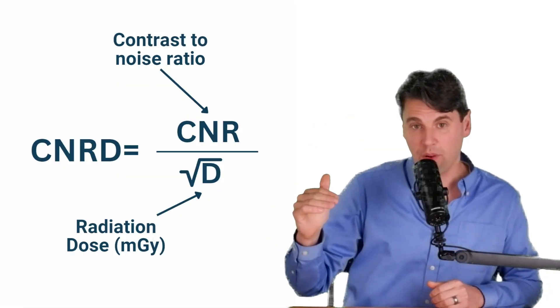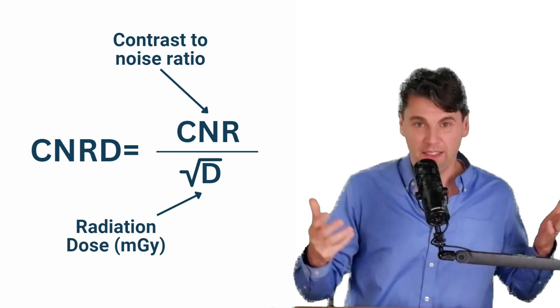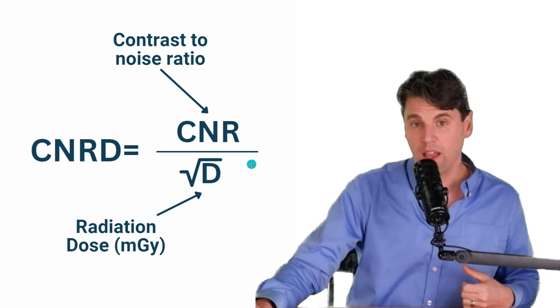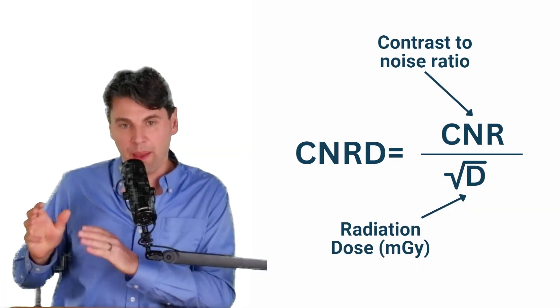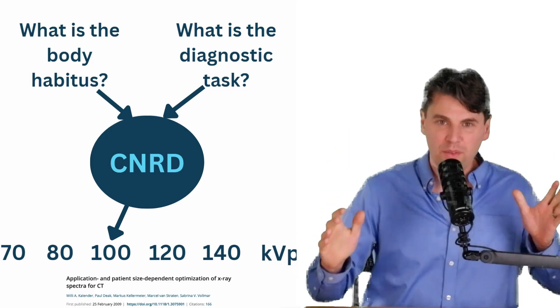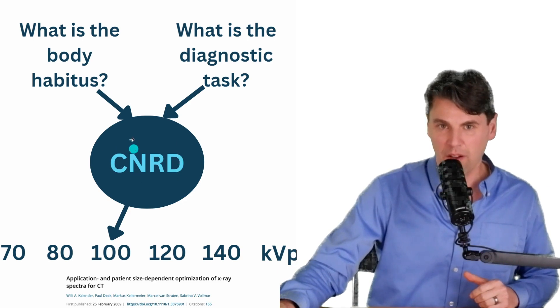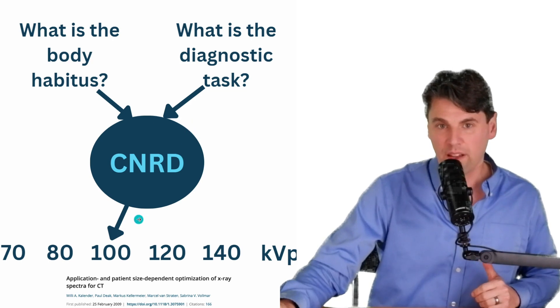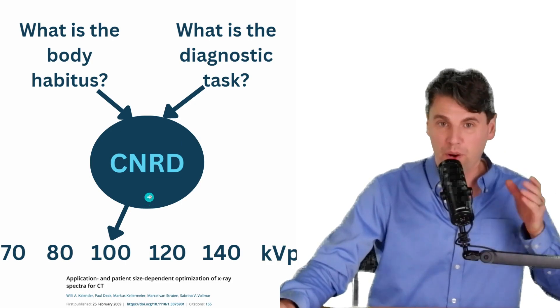That contrast divided by the noise, we can also just call that the contrast to noise ratio. We've had videos on the channel before about what contrast noise ratio is. If we have the contrast noise ratio, then we divide that by the square root of the dose. It's basically saying, under what conditions are we going to get the best image quality for a given dose level. So now we don't have to have Willie sitting here answering the question, we can actually just use our model that says given a body habitus and given a diagnostic task, what's going to be the best KVP based on the contrast to noise ratio per given dose.